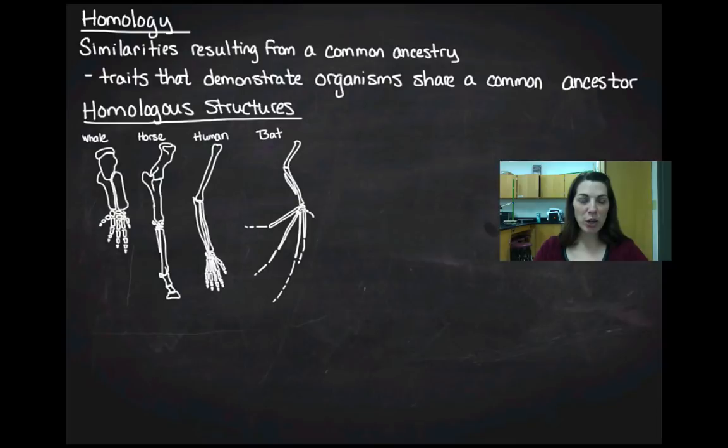What you can notice in all of those is that there's one large bone up at the top, and that's in us the humerus. Then there are two bones in most of these organisms. You can see in the horse it's kind of fused together, but there are two bones here, our radius and our ulna. And then you have the five phalanges, our fingers.